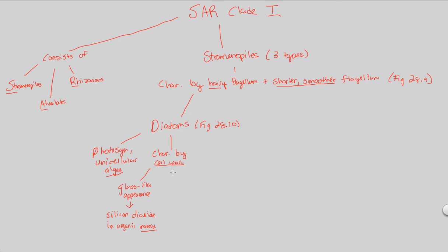The cell walls actually look as if they have two overlapping parts, and this resembles a petri dish. If you've ever seen a petri dish, there's a top and a bottom. If you close that petri dish and look at it from a side view, you'll see the overlap between the two parts — and that's exactly what's seen in diatoms. They possess essentially a petri dish structure, and the reason why is because this is a very strong structure that prevents crushing.